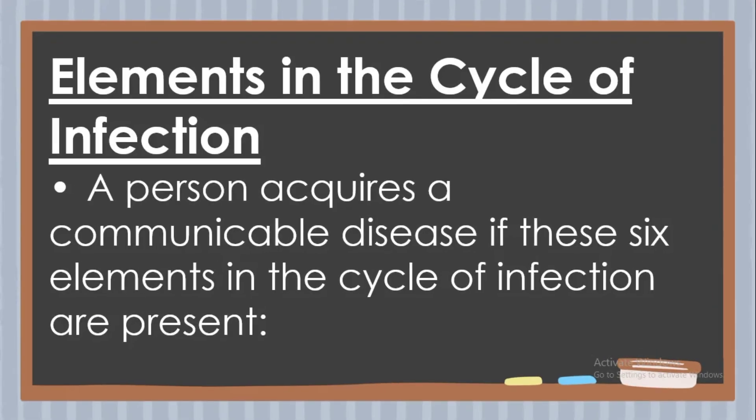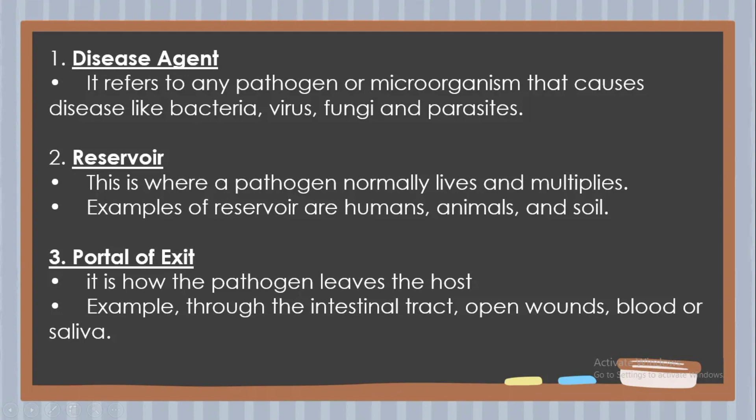A person acquires a communicable disease if these six elements in the cycle of infection are present. The first element is the disease agent, which refers to any pathogen or microorganism that causes disease, such as bacteria, virus, fungi, and parasites.